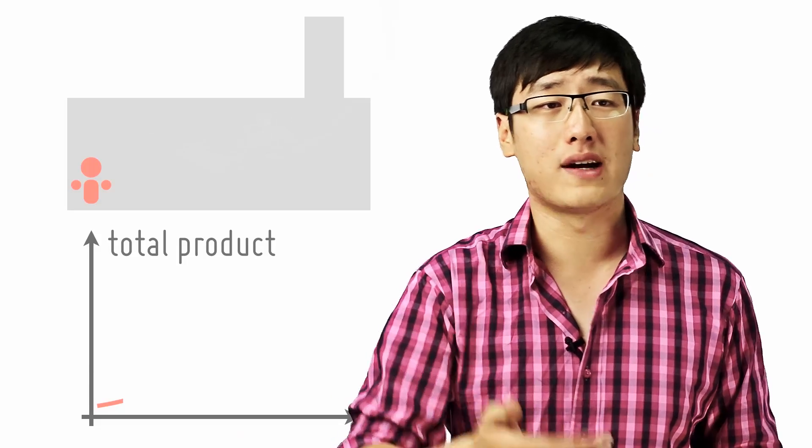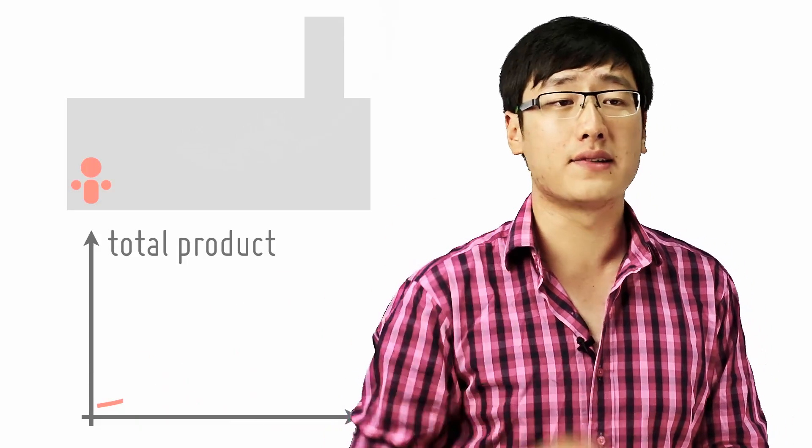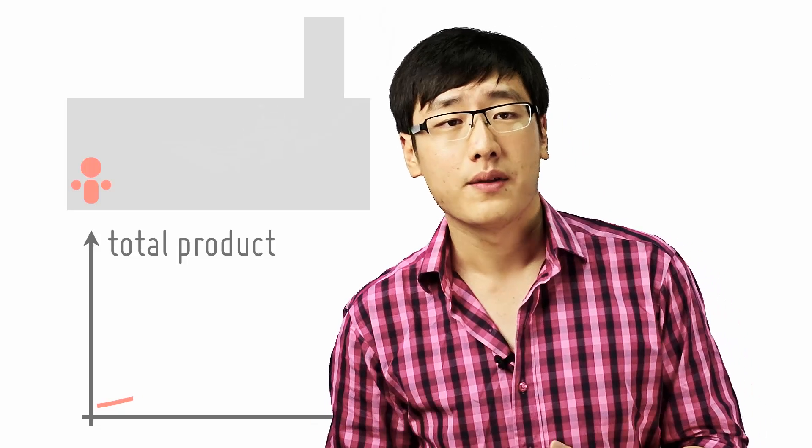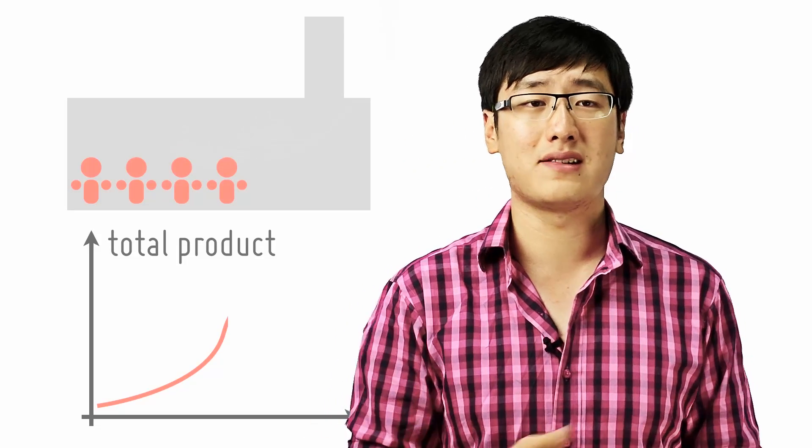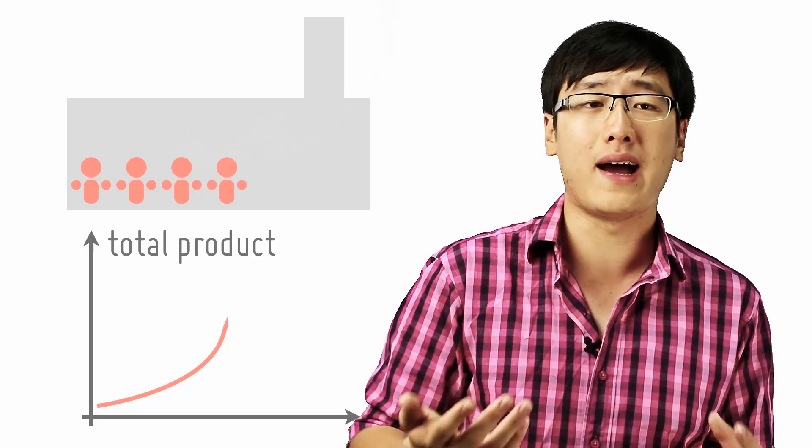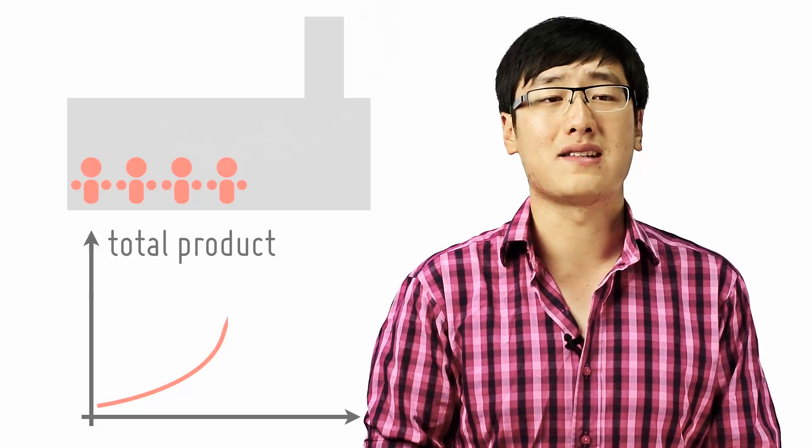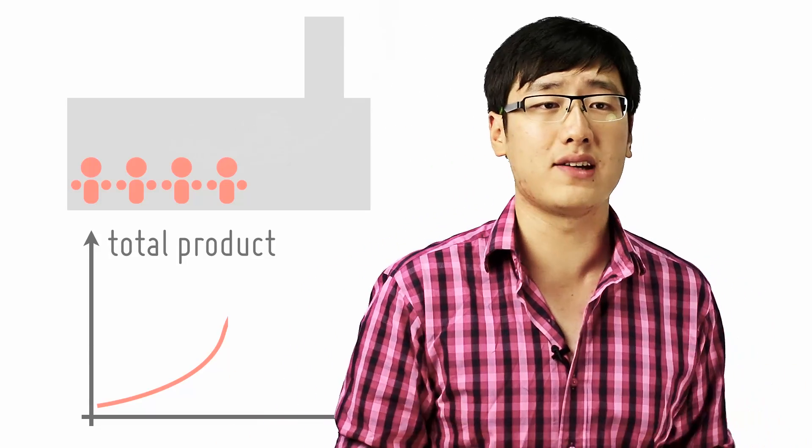So let's imagine what happens when you add more workers in the factory. At first you have an empty factory. So when you add in more workers, the total product increases by a lot. Why? Because when you only have one worker who does his own stuff, we have two workers who might be able to produce more than what two times they do individually. They help each other, they can actually specialize and they do things that it's impossible for one of them to do alone. For example, to operate certain kinds of machinery. That's good, right?